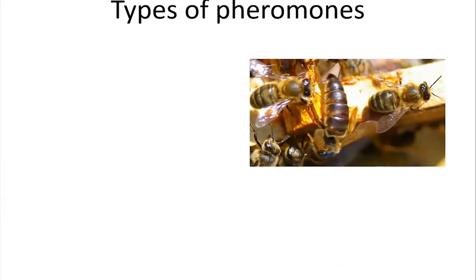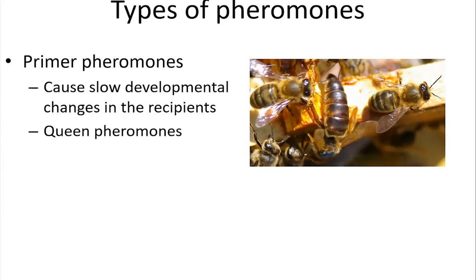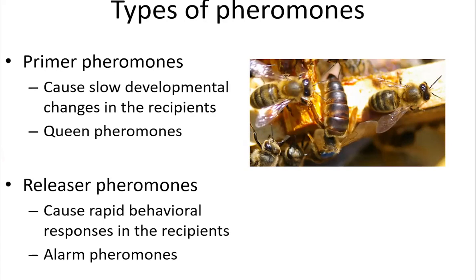Those are the mechanical signals. The rest of the time I thought we'd talk about pheromones. Pheromones are often thought of as the core communication system for social insects. There are two different types: primer pheromones, which cause slow developmental changes — for example, the queen pheromone suppresses activation of ovaries in workers, and when the queen is missing the workers will turn on their ovaries — and releaser pheromones, which elicit a very rapid, purely behavioral response rather than a change in physiology. The classic example of releaser pheromones are the alarm pheromones, which facilitate an attack.